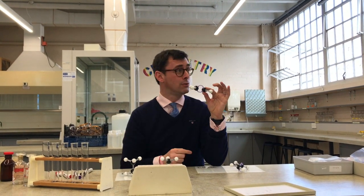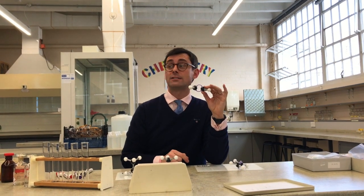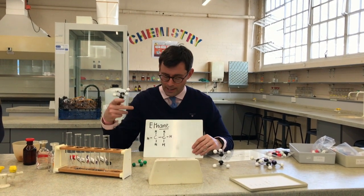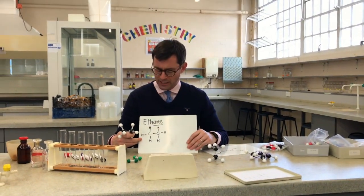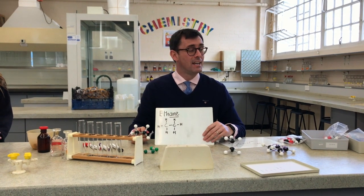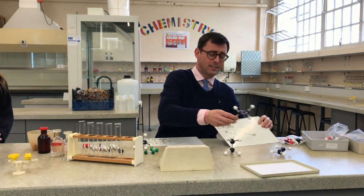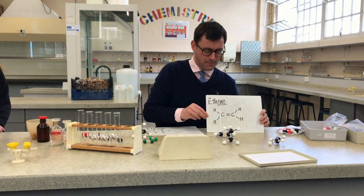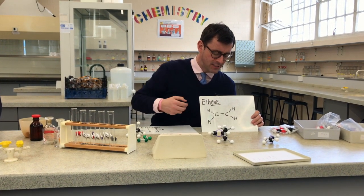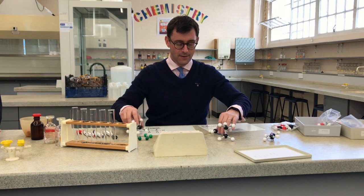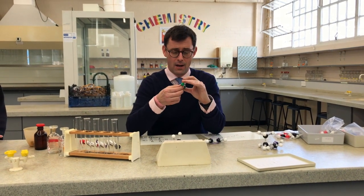How would we describe this molecule? We would describe it as unsaturated. What do we mean by unsaturated? It contains a carbon-carbon double bond. The ethane molecule is saturated because it only contains carbon-to-carbon single bonds. By contrast, the alkene has the carbon-to-carbon double bond, and therefore we describe it as unsaturated.